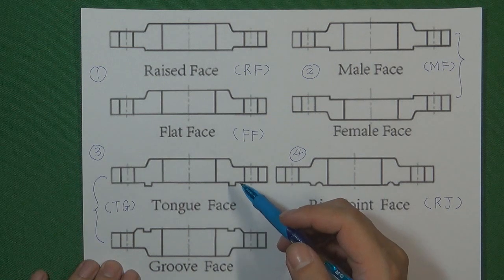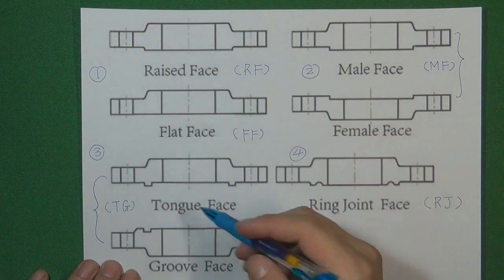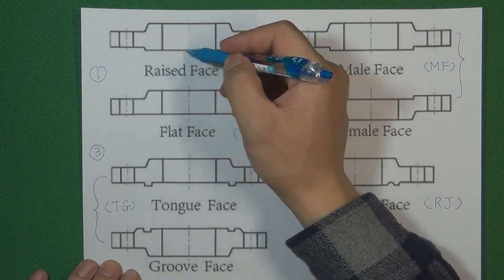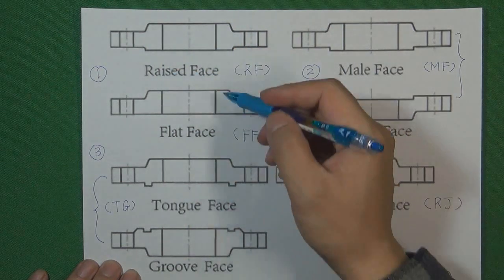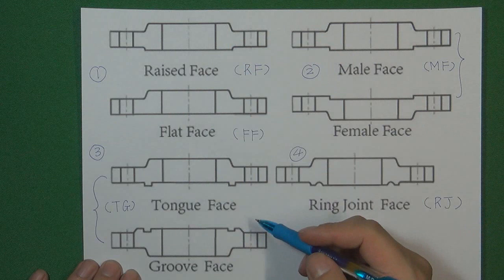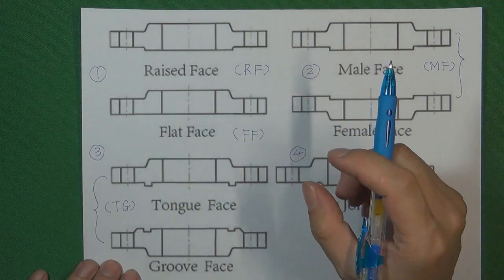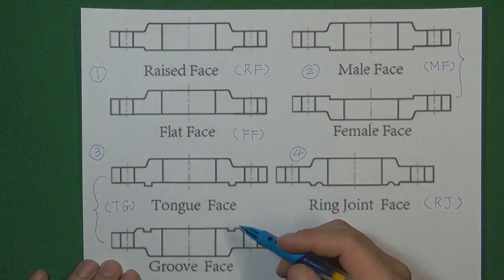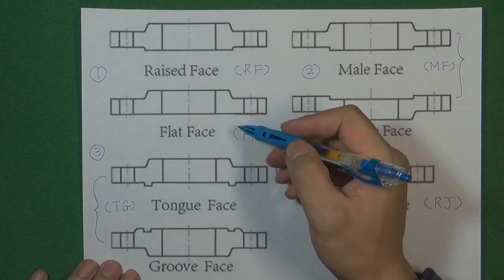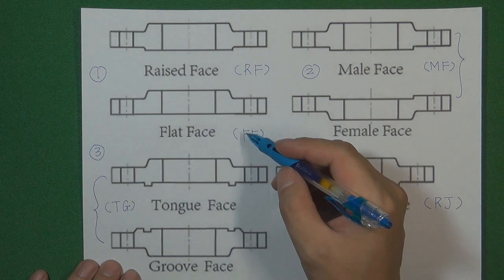When using a gasket to seal two flanges together, we basically have three kinds of design. The first is called raised face (RF). Raised face doesn't have any special protection for the gasket — we simply put the gasket in front of the flange face and another raised face flange cooperates with it to seal. If the gasket is very thick, we don't even need a raised face; we can use a flat face (FF), just placing the gasket between two flat face flanges.